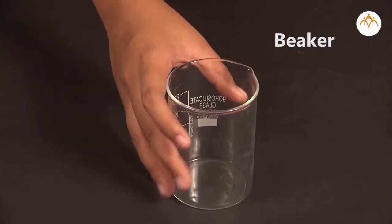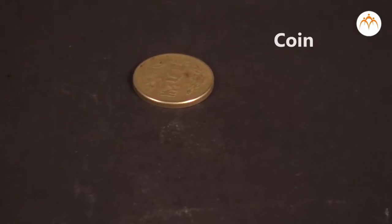Today, let us see the demonstration for Newton's law of motion. Part one. The apparatus required for the first experiment is a beaker, sand, a card sheet and a coin.